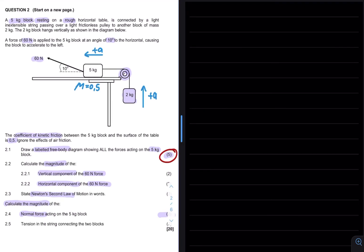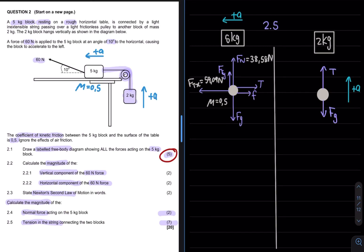Question 2.5 asks to calculate the tension in the string connecting the two blocks for a total of seven marks. Now seeing that the mark allocation is seven marks and we have two blocks connected with the string we will have to make use of simultaneous equations. So we solve this problem by having a look at both the five kilogram as well as the two kilogram free body diagram.